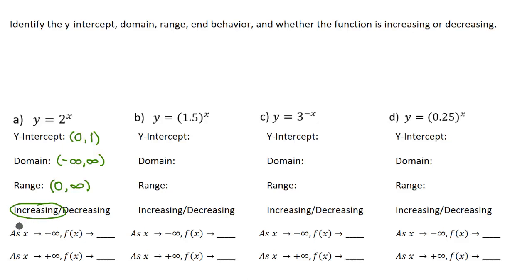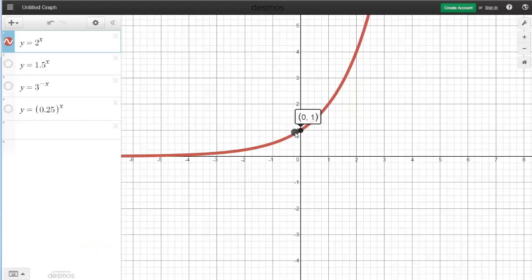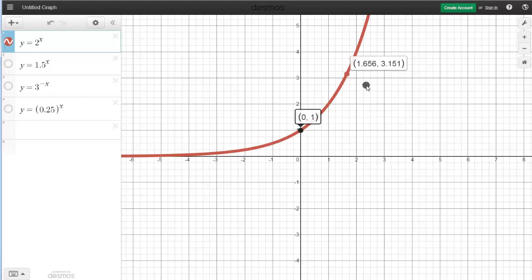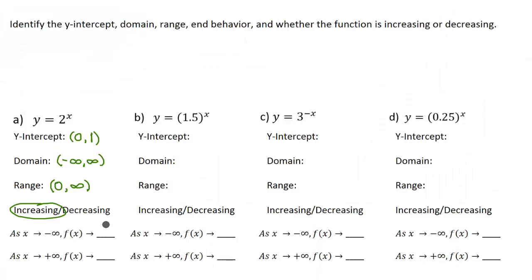And then lastly, end behavior. As the x-values approach negative infinity, or as the graph moves to the left, what are our y-values doing? Going back to my graph, as x-values approach negative infinity and get lower and lower, the y-values are approaching 0. And then as we move to the right and x-values approach positive infinity, the y-values go all the way up to positive infinity. So the end behavior is 0 and positive infinity — you can see the end behavior kind of reflects the range.